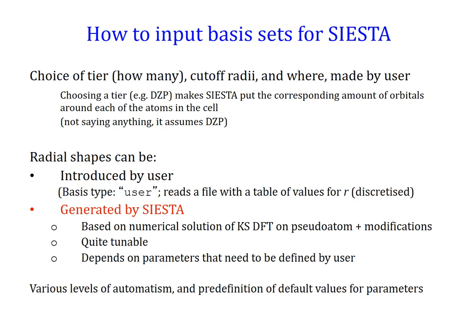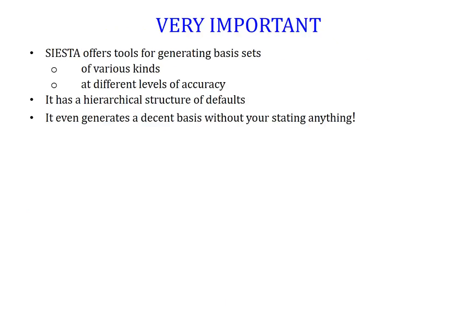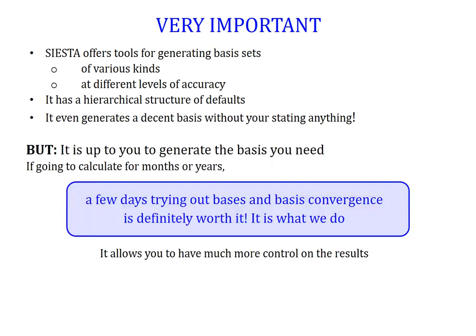There are various levels of automatism and the definition of default values for different parameters. Something very important to say, however, is that the tools offered by SIESTA for generating basis sets allow you to get basis sets of different levels of accuracy. You can have a hierarchical structure of defaults, and you can even generate basis sets without saying anything. But it is up to you to generate the basis you need. You're going to be calculating for probably many months, so just spending a few days trying out basis set convergence is really what we recommend and actually what we do ourselves. It allows you to have much more control on the approximations you're performing.